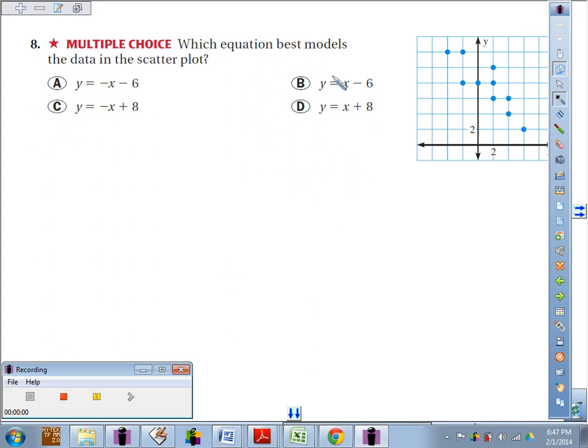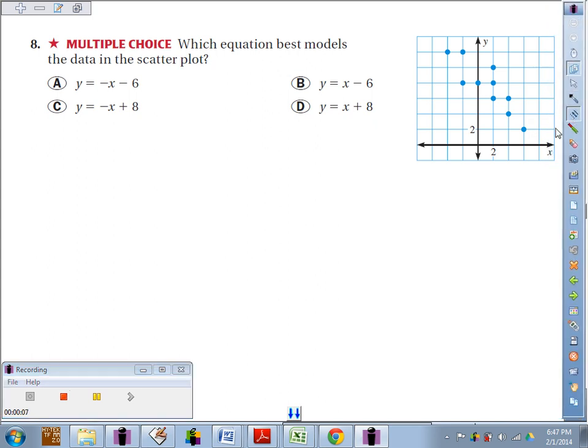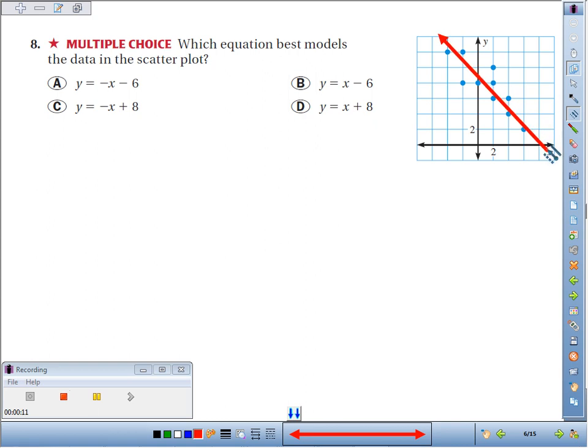Number eight, multiple-choice question: which equation best models the data in the scatter plot? Nice thing is they made the scatter plot for us already. We can definitely see that there is a negative correlation. The dots are kind of in a general downward trend.